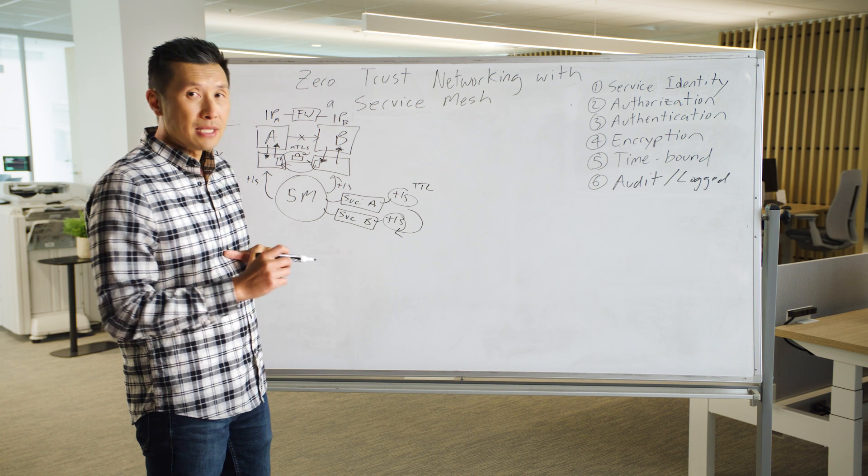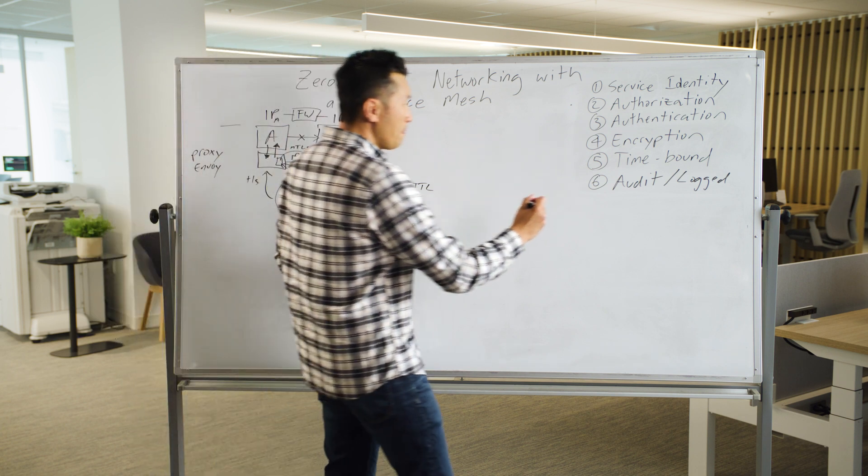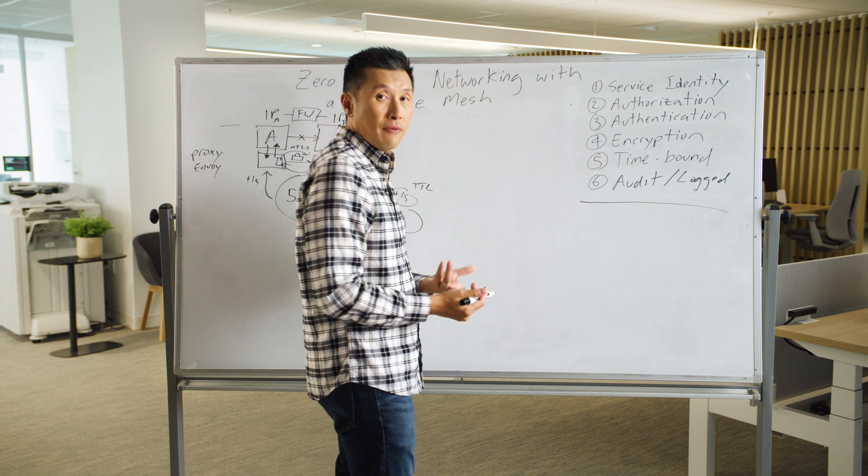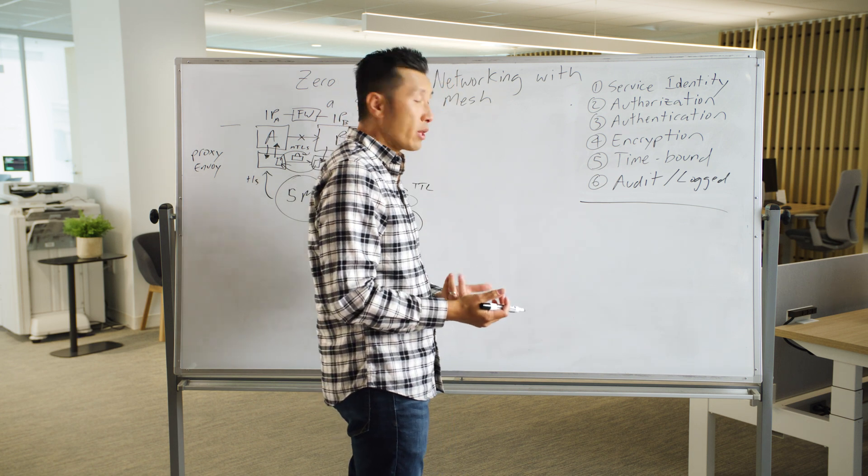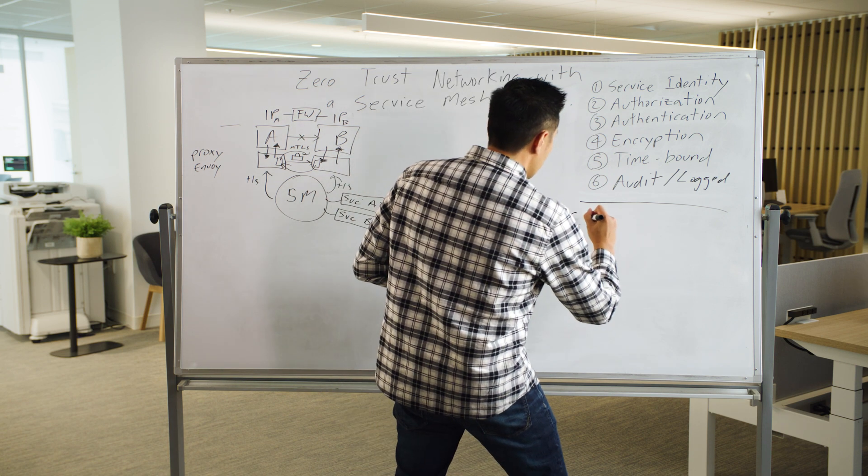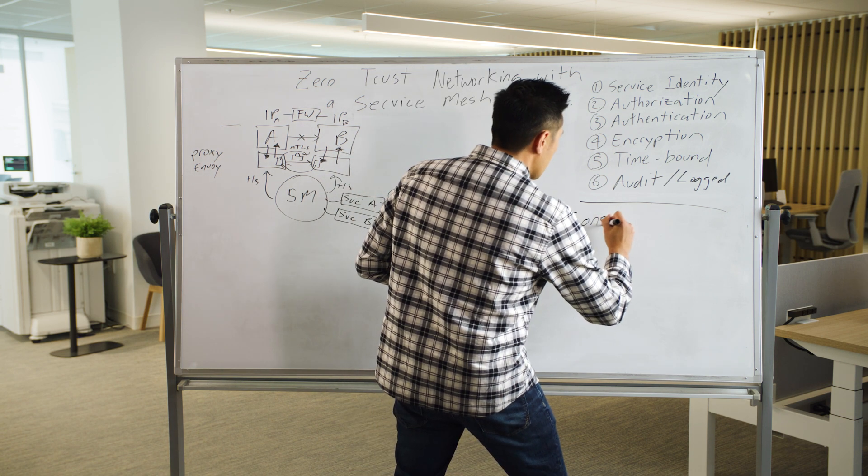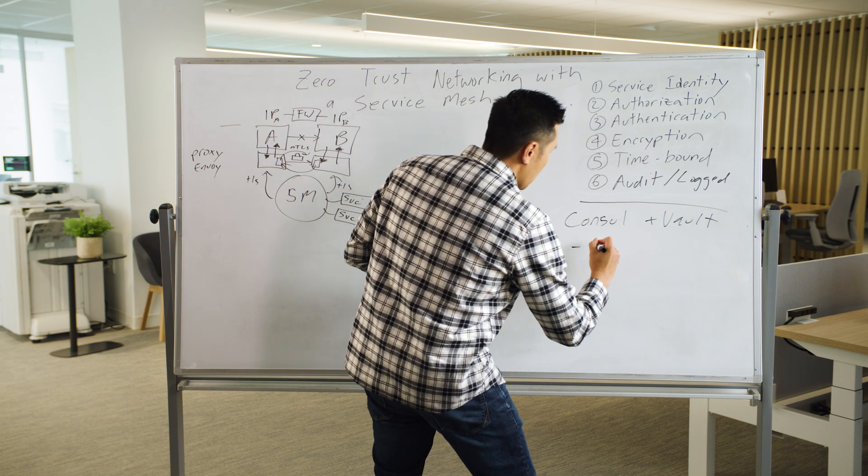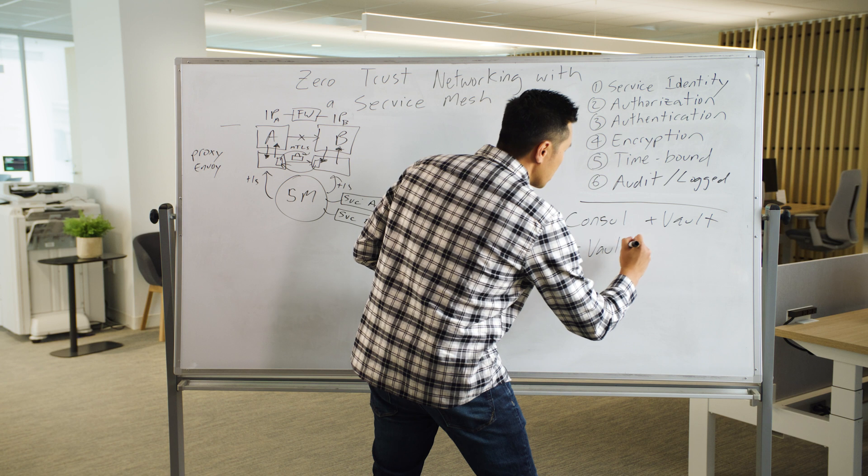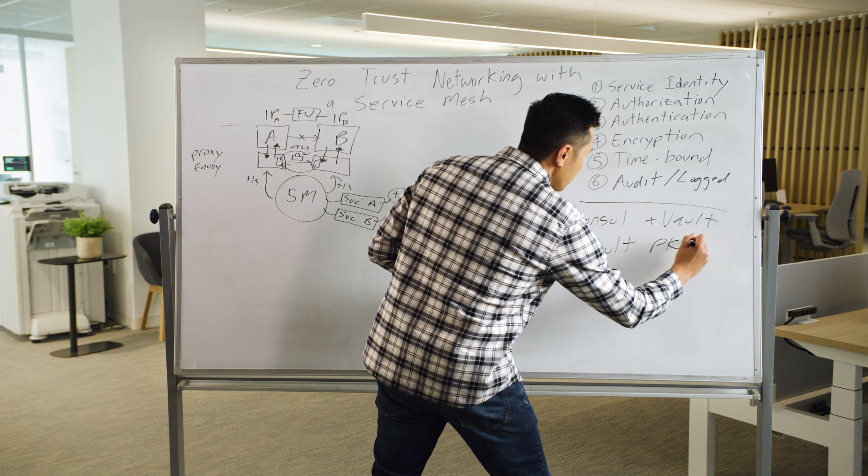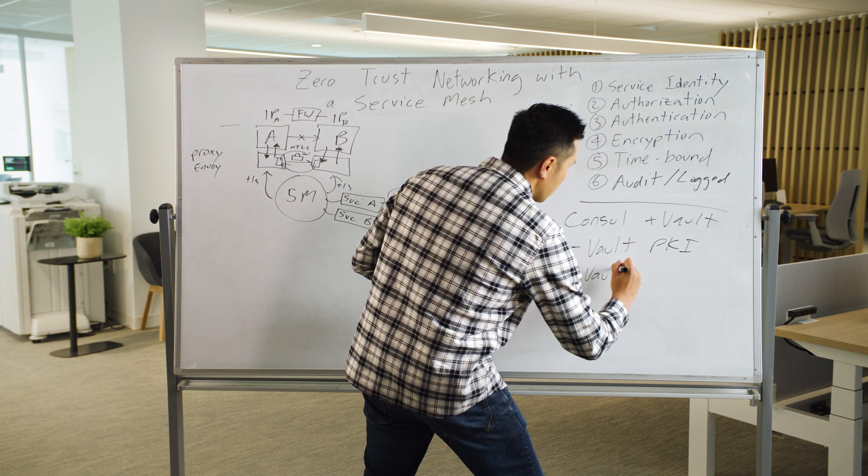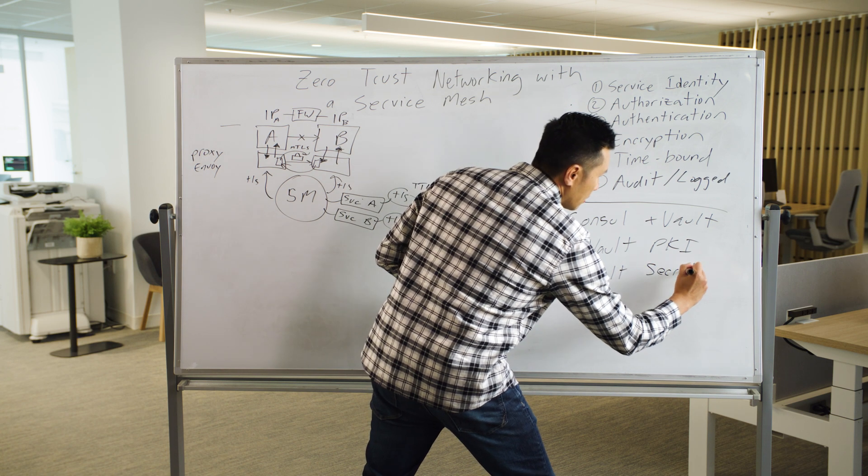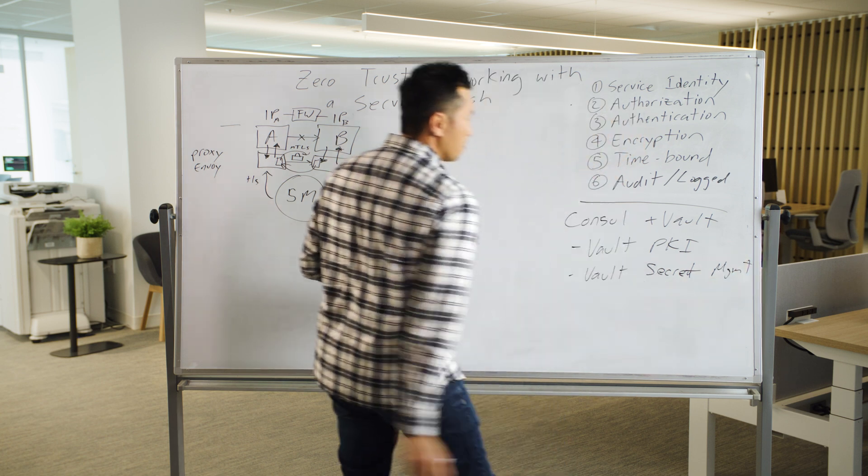What I want to touch on next is to extend it a little further and talk about some of the integrations that we have here at HashiCorp for Consul service mesh with HashiCorp's Vault. More specifically, we'll talk about how we can use Vault's PKI engine and Vault's secrets management to achieve this.